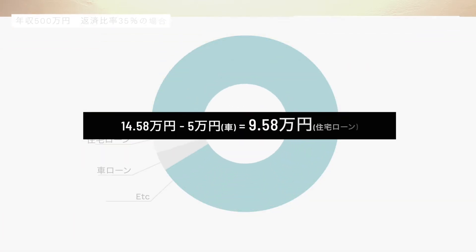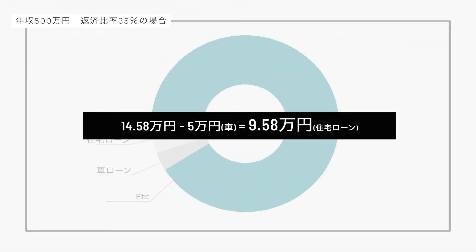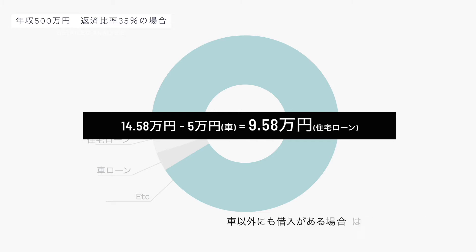皆さん多いのが既存の借り入れ、車が一番多いですからね。車の借り入れ分を毎月5万円返済していたとした場合、14.58万円－5万円＝9.58万円が住宅ローンに回していいお金となります。車以外にも何かしら借り入れがあった場合には、同じようにマイナスしてください。今回は車だけだったとして、9.58万円が住宅ローンに回せるお金となります。